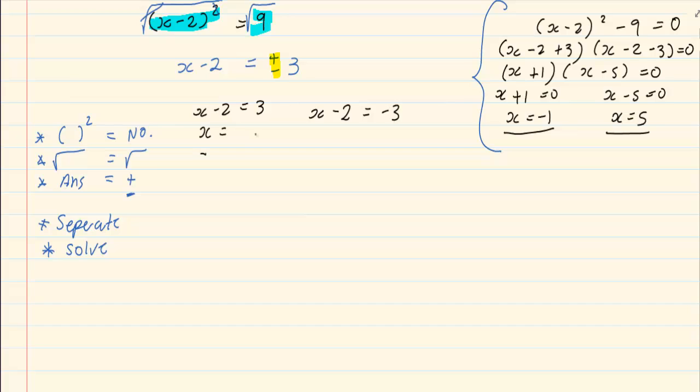x = 3+2, so x=5. And here x = -3+2, so x=-1. You'll notice the answers are exactly the same.